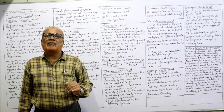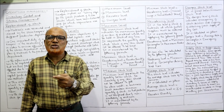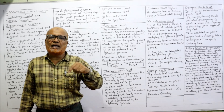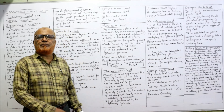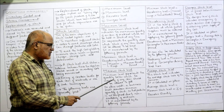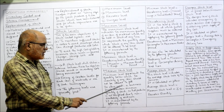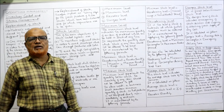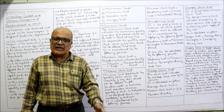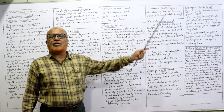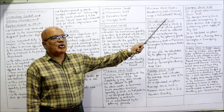Minimum stock level is the lowest level below which inventory should not fall. If inventory falls below the minimum stock level, there is always a danger of shortage and production may be stopped or delivery of goods cannot be made on time. A business must maintain a minimum quantity of stock so that production is not hampered. The formula for minimum stock level is: Minimum Stock Level = Reordering Level − (Normal Usage × Normal Reorder Period).